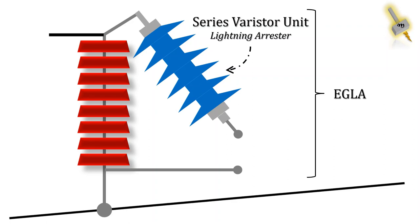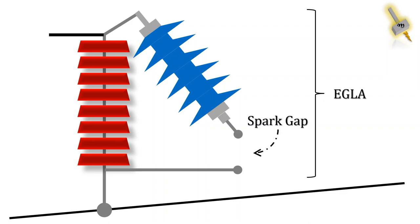The SVU is rated for nominal line to ground voltage, which means after the surge event, when the normal system voltage is restored, the SVU should interrupt the follow on current. Then we have the spark gap, which is rated as per critical flashover voltage of insulator, which means before the insulator flashes over, the spark gap should flashover.